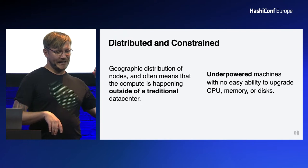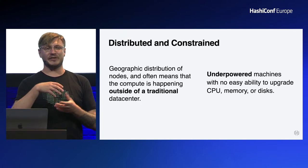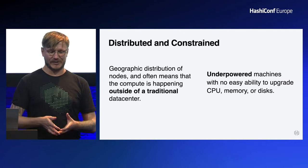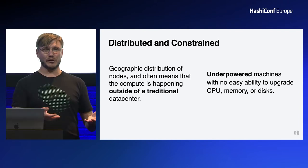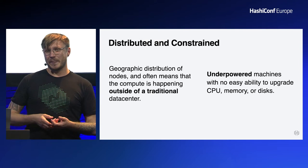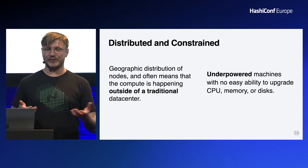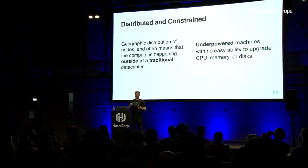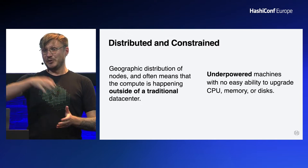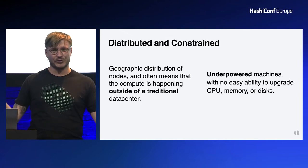One of the main features is that it is geographically distributed — it runs mostly outside of your traditional data center. This might be for data locality reasons: you want your data close to your users, potentially for legal reasons around storing customer data in countries with particular rules. You might also want to run it close to users for a better experience, like a content delivery network, which also saves costs on data transfer.